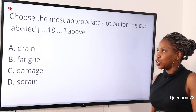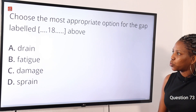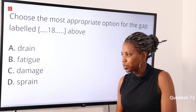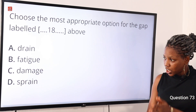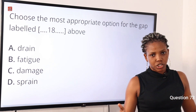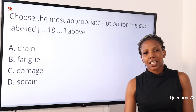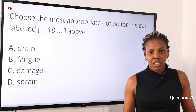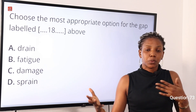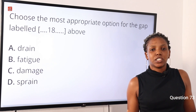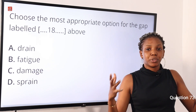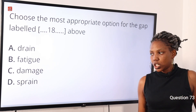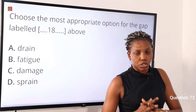Question 73: Choose the most appropriate option for the gap — option A: drain, option B: fatigue, option C: damage, option D: spray. The answer is damage. The writer is talking about the injuries incurred by boxers while competing with their opponents, specifically describing the brain. So it is 'brain damage' — the right choice of word. Option C is the correct answer.